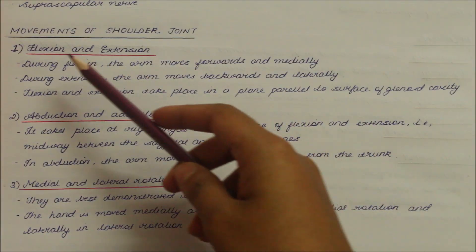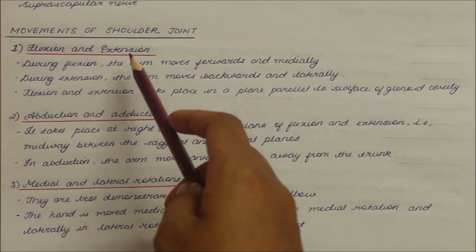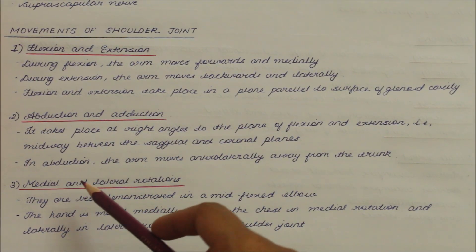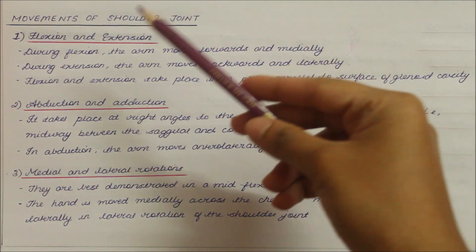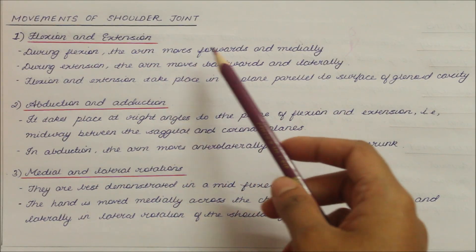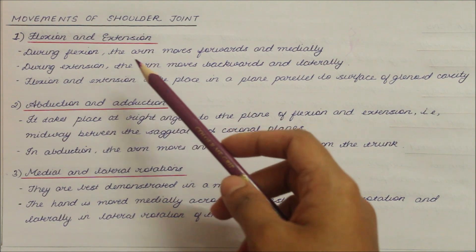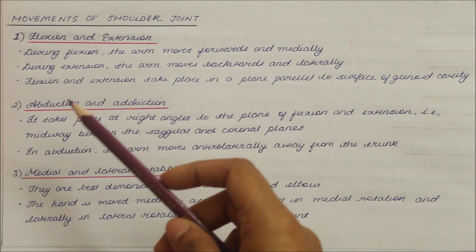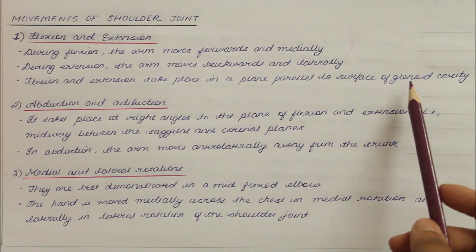Let's look at the movements of the shoulder joint. We have flexion and extension movements, abduction and adduction, and medial and lateral rotation. During flexion, the arm moves forwards and medially; during extension, the arm moves backwards and laterally. Flexion and extension take place in a plane parallel to the surface of the glenoid cavity.